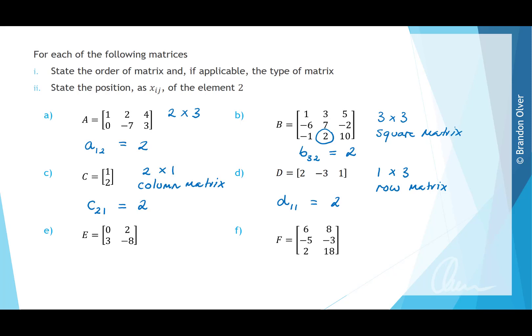For matrix E, it has 2 rows and 2 columns, making it a 2 by 2 square matrix. The element 2 is at position E row 1, column 2. For matrix F, it has 3 rows and 2 columns, making it a 3 by 2 rectangular matrix. The element 2 is at position F row 3, column 1.